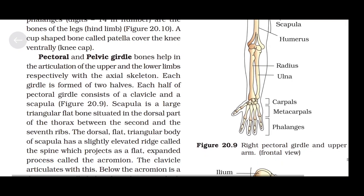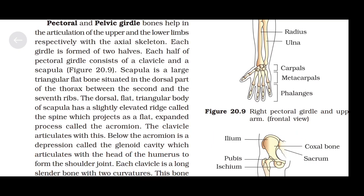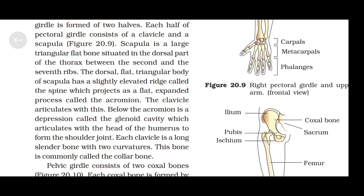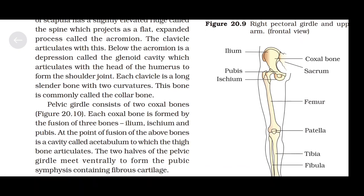Pectoral and pelvic girdle bones help in the articulation of the upper and lower limbs respectively with the axial skeleton. Each girdle is formed of two halves. Each half of the pectoral girdle consists of a clavicle and a scapula. Scapula is a large triangular flat bone situated in the dorsal part of the thorax between the second and seventh ribs. The dorsal flat body of the scapula has a slightly elevated ridge called the spine, which projects as a flat expanded process called the acromion. The clavicle articulates with this. Below the acromion is a depression called the glenoid cavity, which articulates with the head of the humerus to form the shoulder joint. Each clavicle is a long slender bone with two curvatures, commonly called the collar bone.